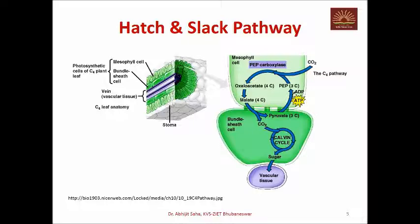Now if you see this diagram, it is very clear that there are two cycles operating here. In the mesophyll cells — you see the upper cell, this is called the mesophyll cell — below that is the bundle sheath cell, and the innermost part is the vascular tissue. Two cycles operate in two different cells: the C4 cycle operates in the mesophyll cell, and the Calvin cycle operates in the bundle sheath cells. In C3 plants, there was only one cycle — the Calvin cycle — operating in the mesophyll cells.